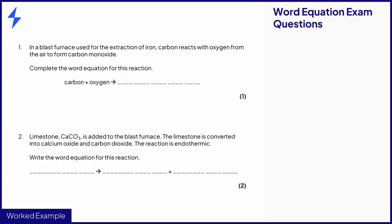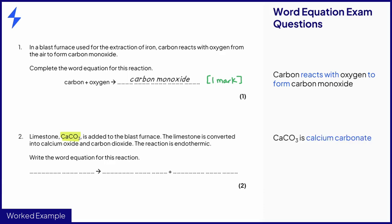The key information from question one is that carbon reacts with oxygen to form carbon monoxide. Since the question already has the reactants written in, you need to add carbon monoxide as the product for one mark. In question two, the formula of limestone is CaCO3, which means there is calcium bonded to carbon and oxygen, and the ate ending should be applied. This gives the chemical name calcium carbonate.